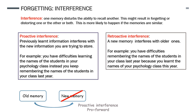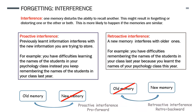The opposite is retroactive interference — a new memory interferes with trying to remember an old one. For example, I might have difficulty remembering the names of students in my class last year because I have learned all of your names this year. Make sure you have got those definitions down. You don't have to use that example — use one that makes more sense to you so you're more likely to remember it.